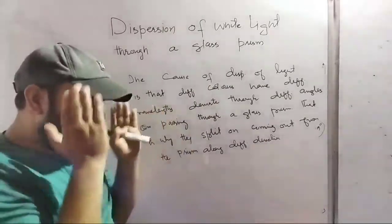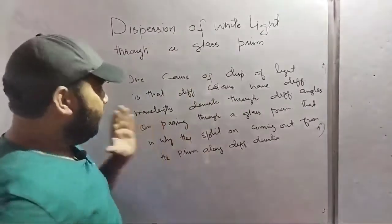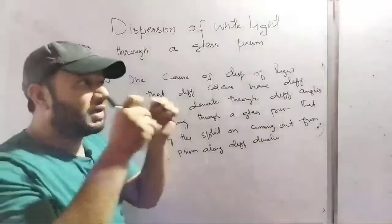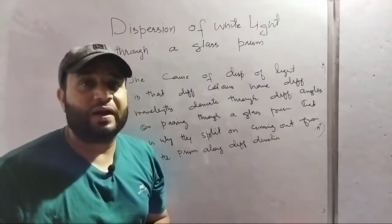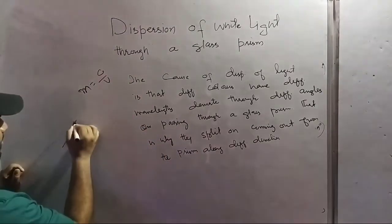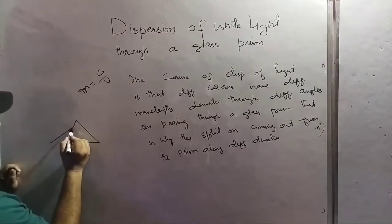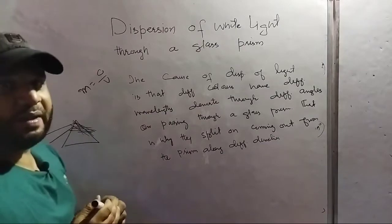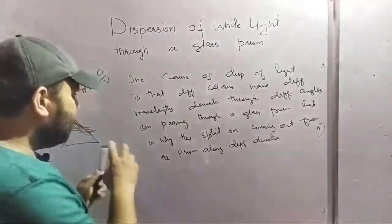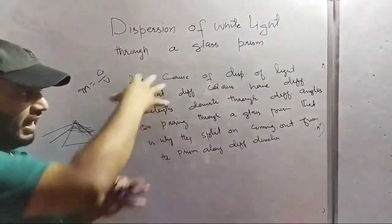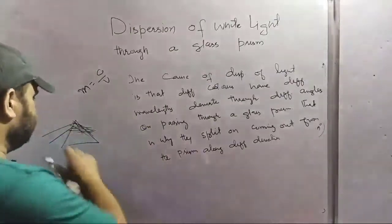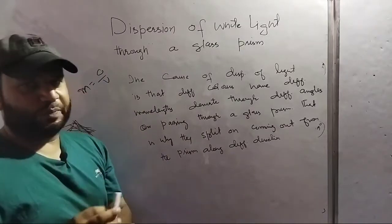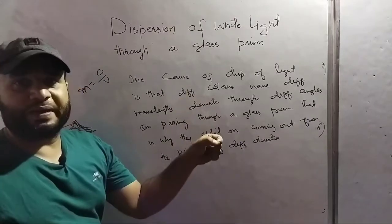One more important point: the band of colors that we obtain on the screen when white light splits into its constituent colors — that is called the spectrum. The band of colors our eyes can see is called the visible spectrum. We can obtain two types of spectra: if the constituent colors do not overlap and form separate distinct bands, that is called a pure spectrum. If many colors overlap with each other, that is called an impure spectrum.